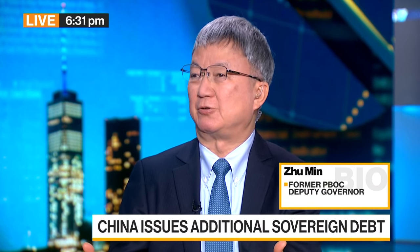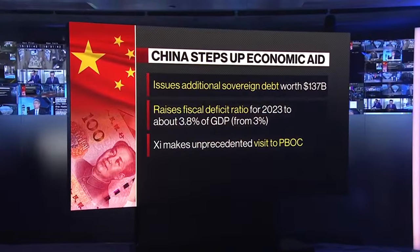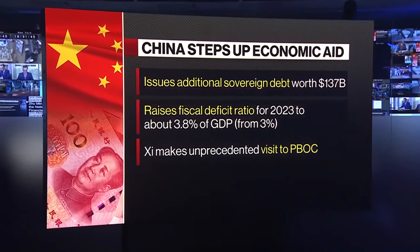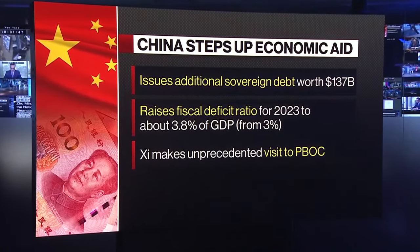But we also have structural issues. The previous history growth engines are gone — which is infrastructure investments, the real estate sector, and exports. Real estate has an oversupply issue, particularly with demographic change, and infrastructure returns are low because we've invested too much. Exports have changed a lot — global growth is low and geopolitical risk plays quite an important factor. So Chinese net exports no longer become the growth engine.